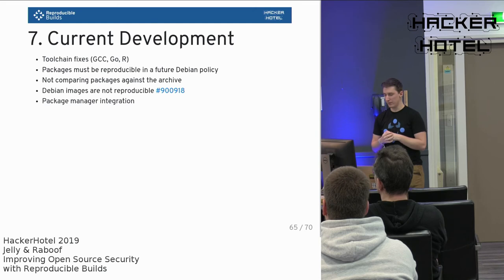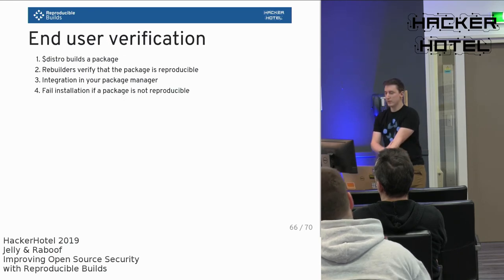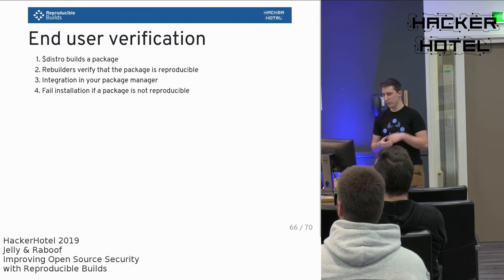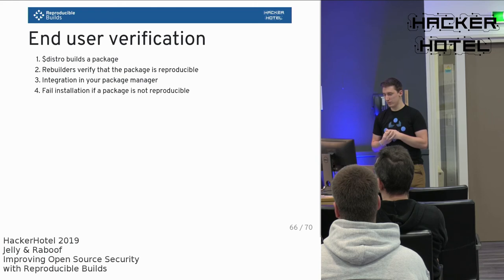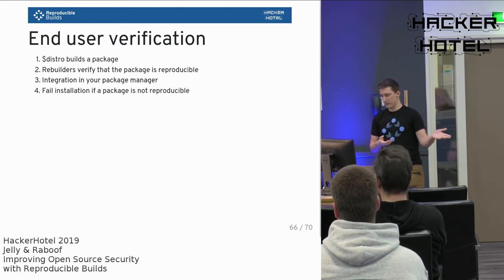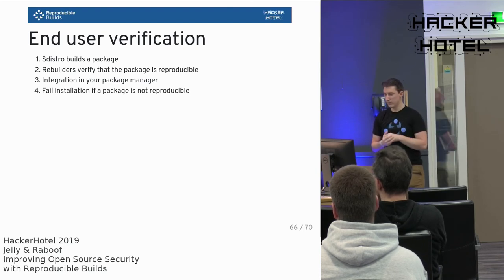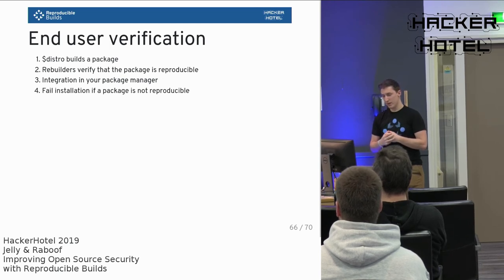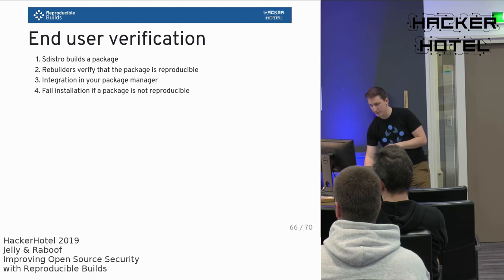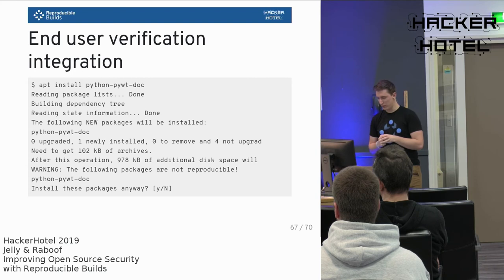This whole reproducible concept wouldn't work without a way to integrate it into your distribution — the package manager needs to be able to check if a package is reproducible. At a reproducible builds summit in Paris, there was discussion of how to inform users that the package they download from, for example, the Debian repository hasn't been tampered with on the build server. The idea is: the distro builds the package, a set of trusted rebuilders rebuilds it and publishes their results via an API, and if you try to install a package that's not reproducible, you get red flags in your package manager.